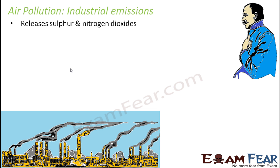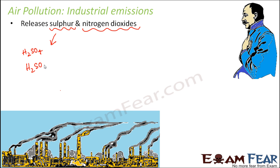Industrial emissions primarily contain sulfur and nitrogen dioxides, which are extremely harmful for humans. Sulfur dioxide is a colorless gas with a very pungent smell, and it is very reactive — it reacts easily with other substances to form harmful things like sulfuric acid, sulfurous acid, or sulfate particles.